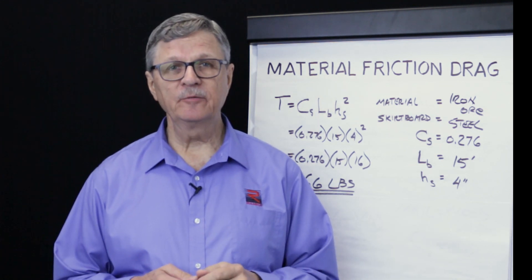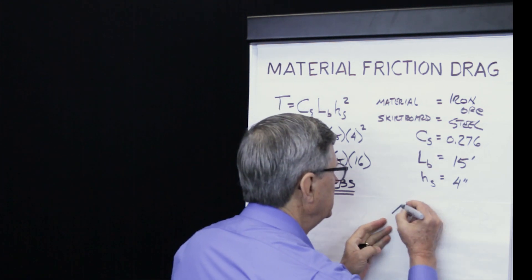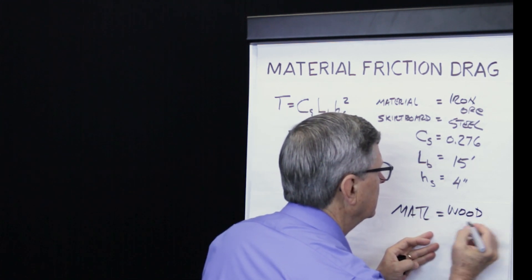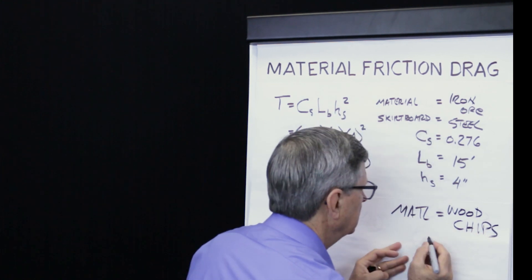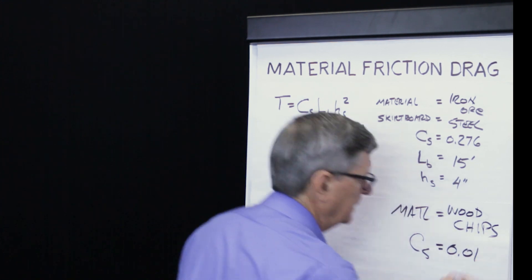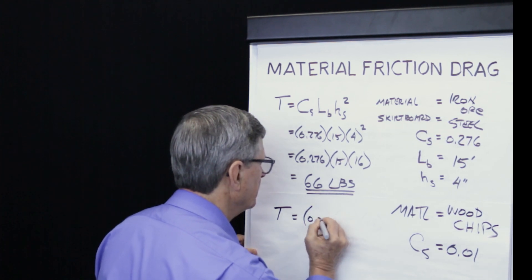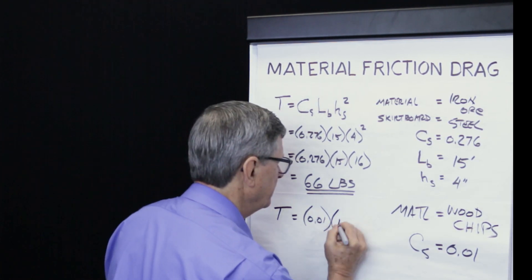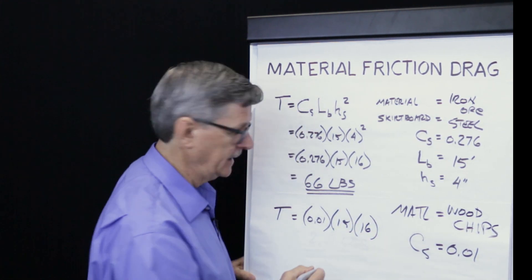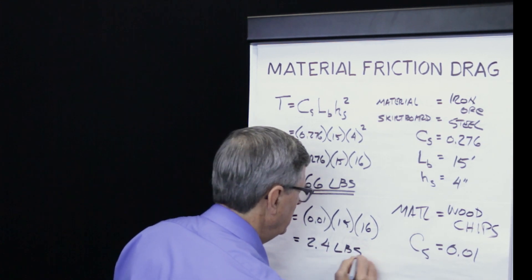Now let's calculate material frictional drag within the skirt board for a different material. We'll use wood chips as our material. CEMA gives us a frictional coefficient of 0.01 for wood chips. To calculate the drag, we use the same equation as before, 0.01 times 15, because the skirt board length is the same as before, times 16 because the depth of the material is the same as before.